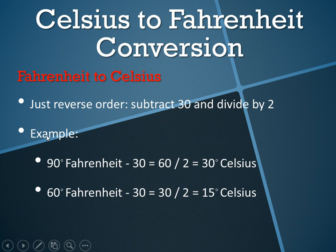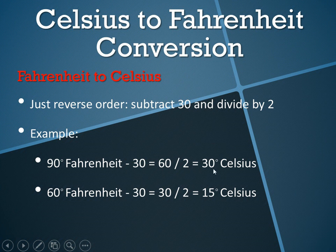To convert Fahrenheit to Celsius, just reverse the order. So instead of multiplying by 2 and then adding 30, you subtract 30 and divide by 2. For example, 90 degrees Fahrenheit minus 30 equals 60, divided by 2 is 30 degrees Celsius. And 60 degrees Fahrenheit minus 30 is 30, divided by 2 is 15 degrees Celsius.